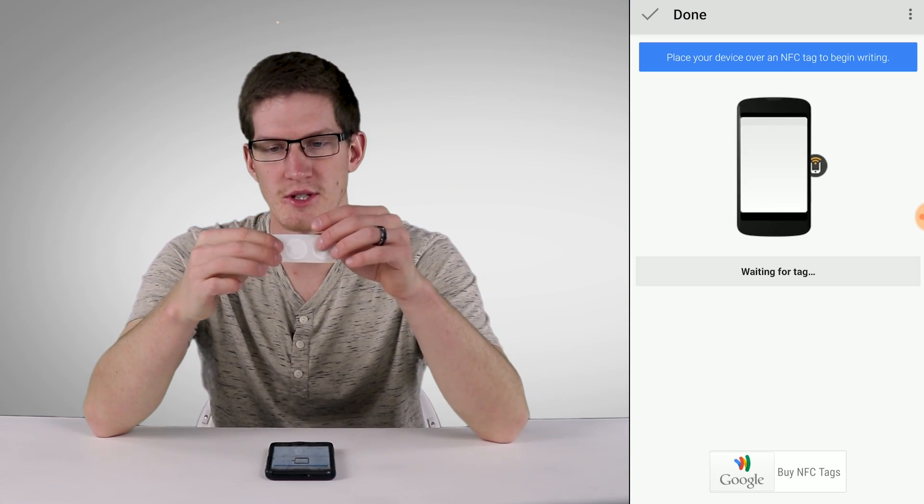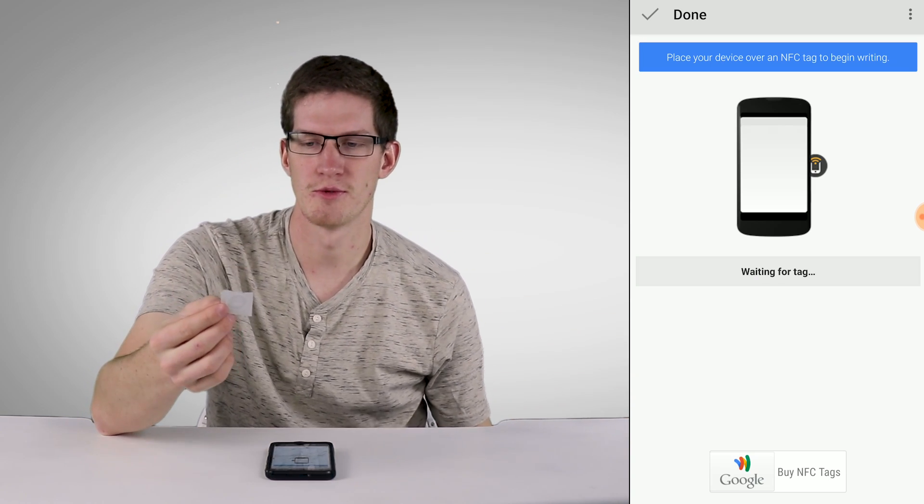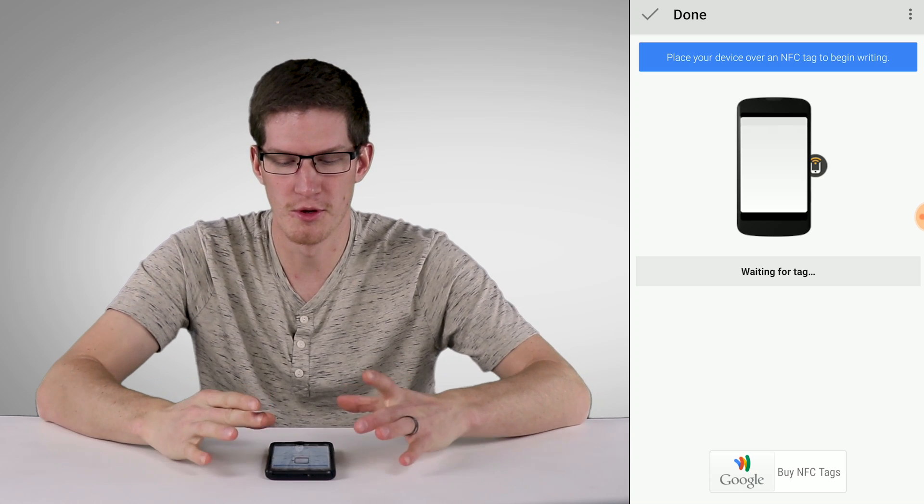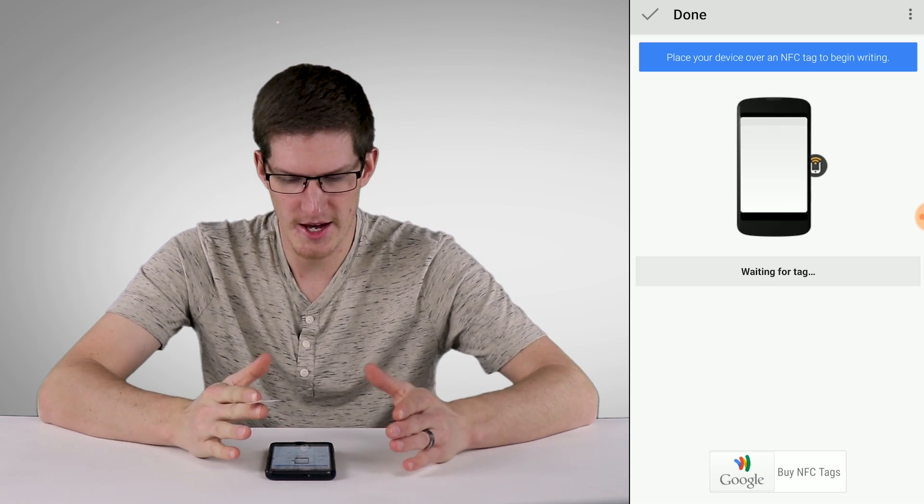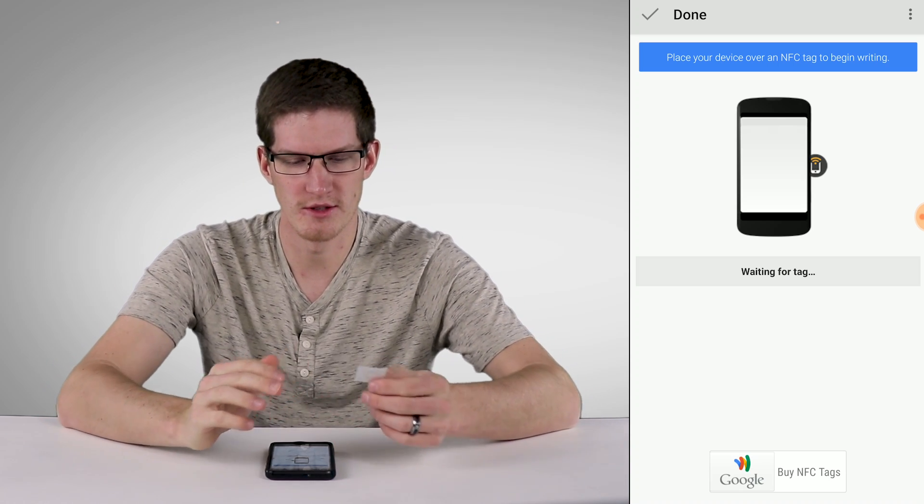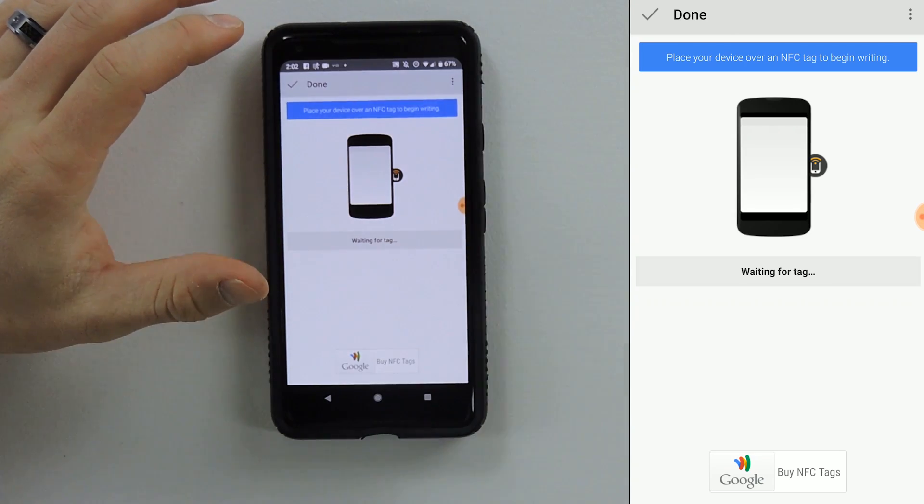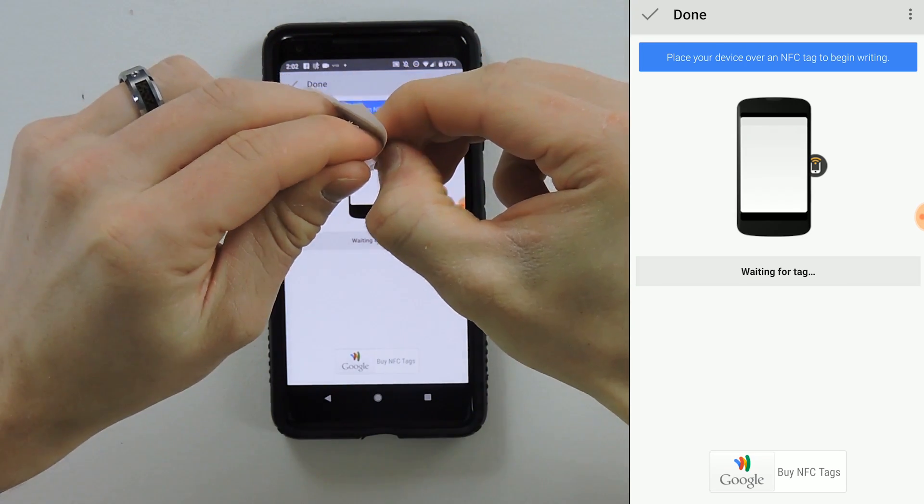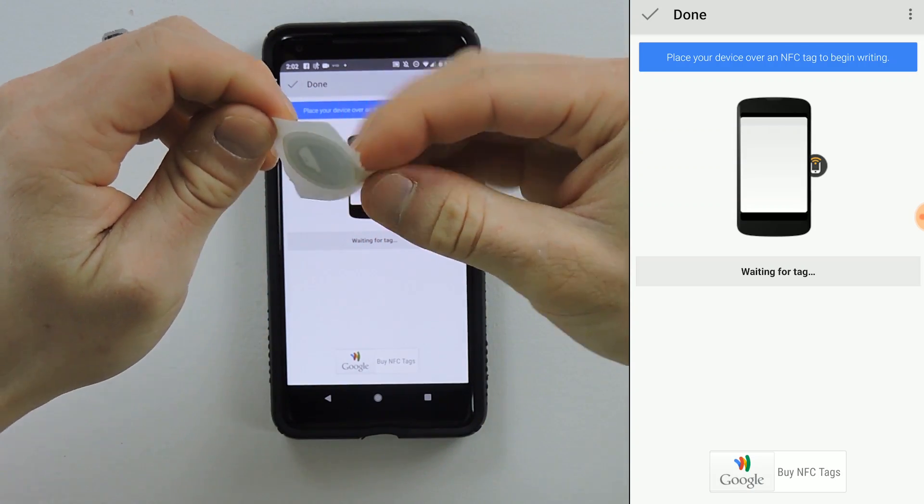And now is where we scan the tag. Now these NFC tags I found on Amazon. They're pretty small. The reason I like them, they're about an inch in diameter. They have really big ones and they have keychain ones. They have all kinds of different kind. But the reason I like these is they're small. They have a sticky back and they can be used for lots of different applications.